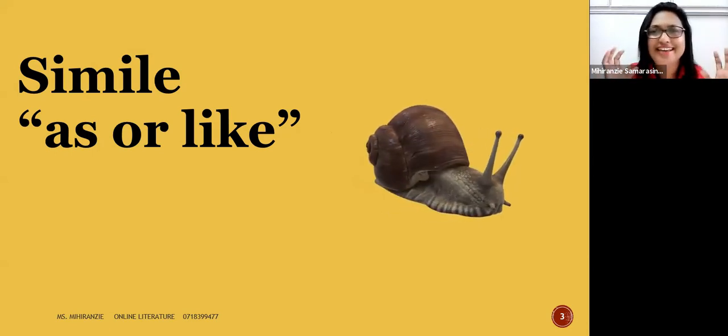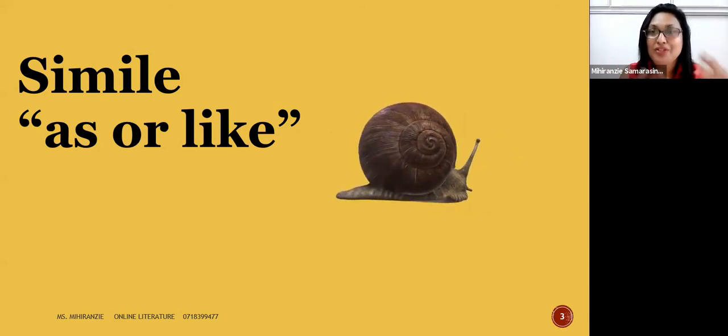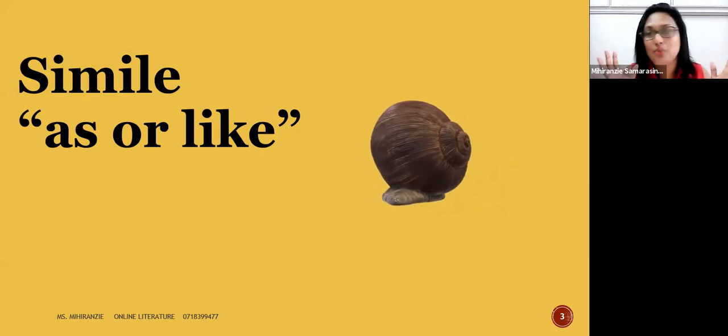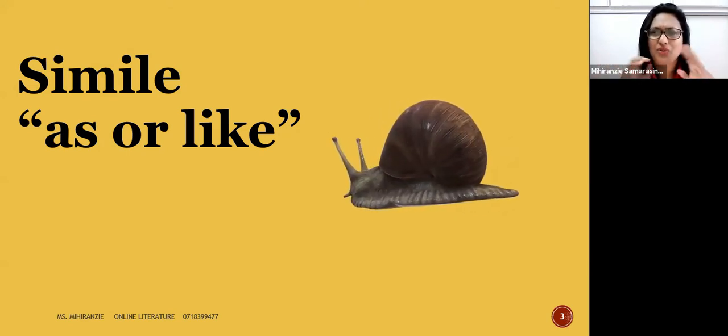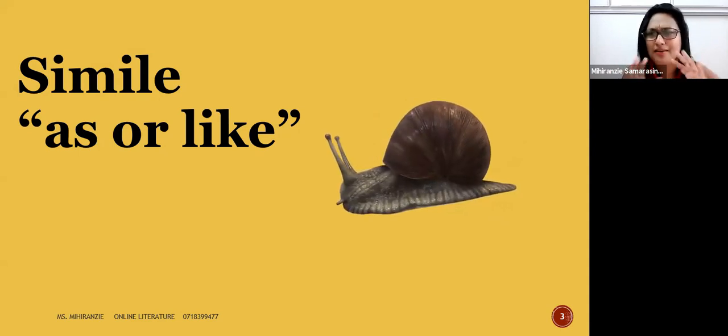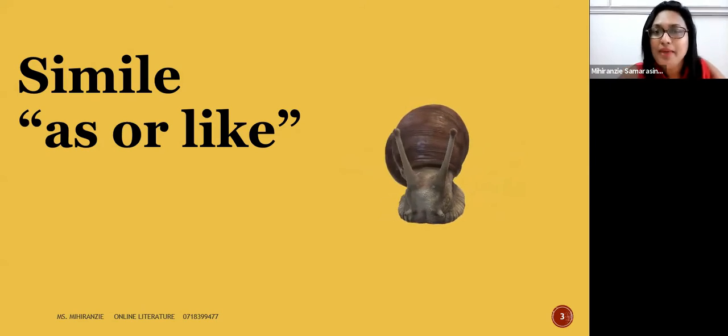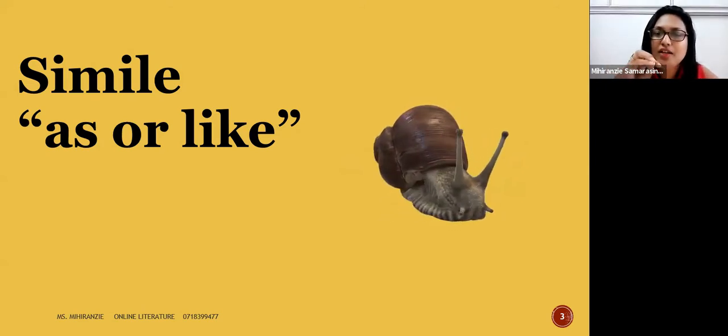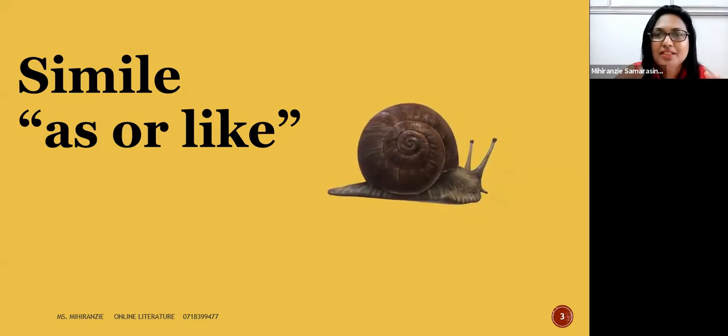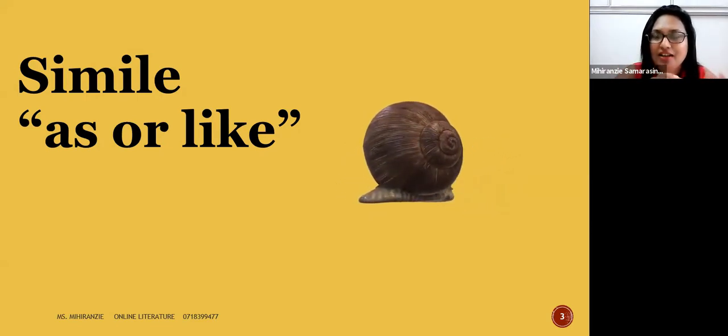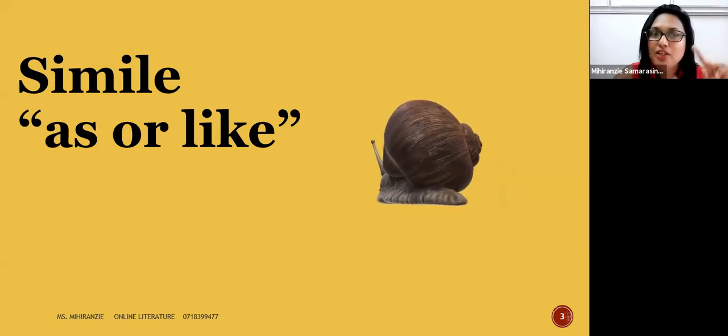Then it becomes so nice and elaborated that people would like to read what you write. But don't make it too much—a lot of details will make it boring also. Just have it at a minimal level, a good level. So you compare the activities or the looks or the skin, the shell, or whatever of the snail to something.